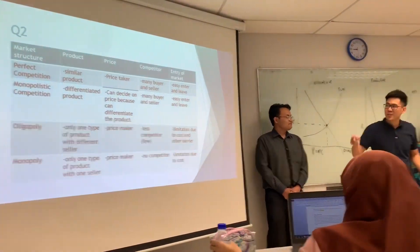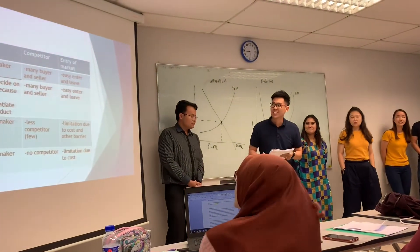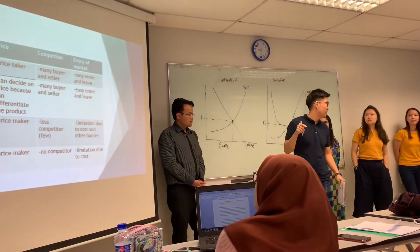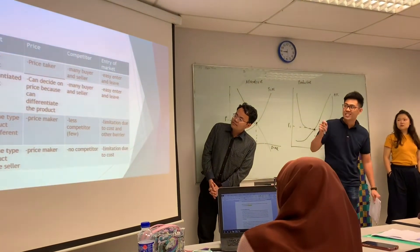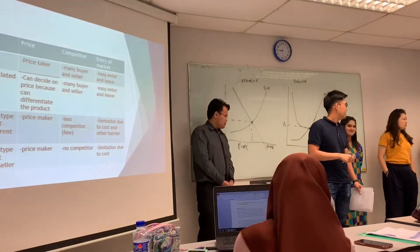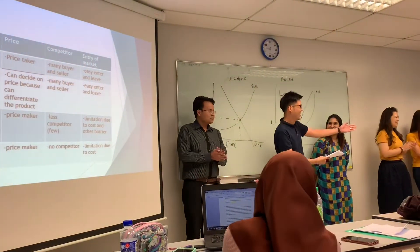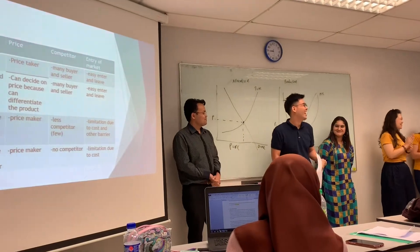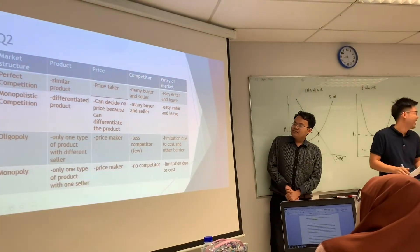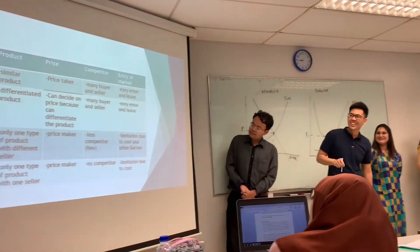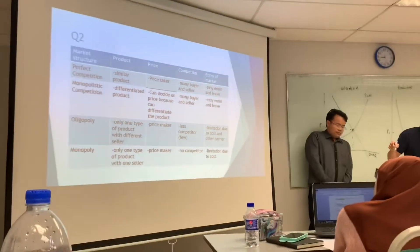We'll go into question number two: what are the types of market structures? We actually have four market structures. The first one is perfect competition. The second one will be monopolistic competition, and the third one will be oligopoly.